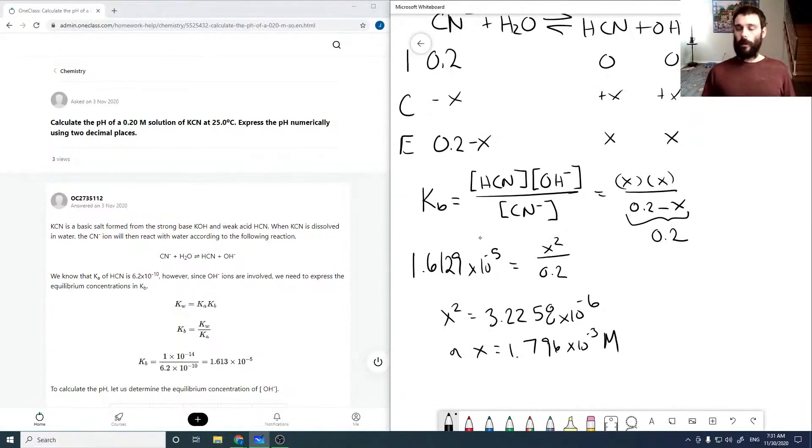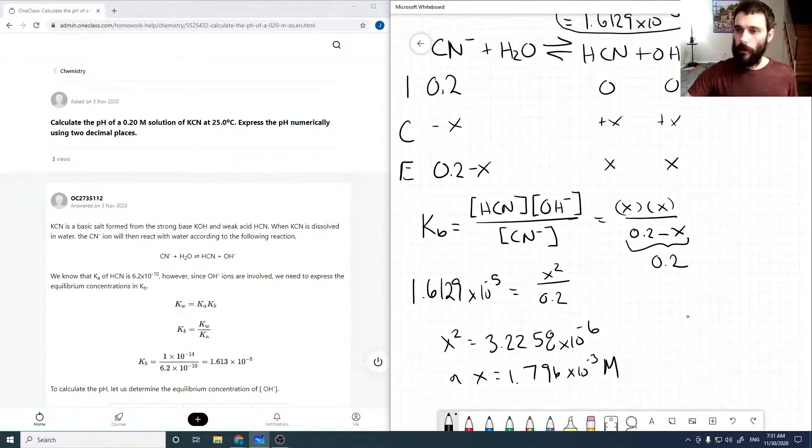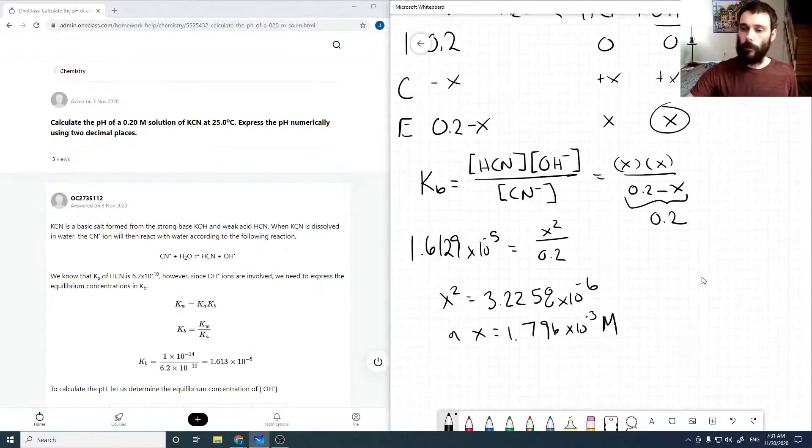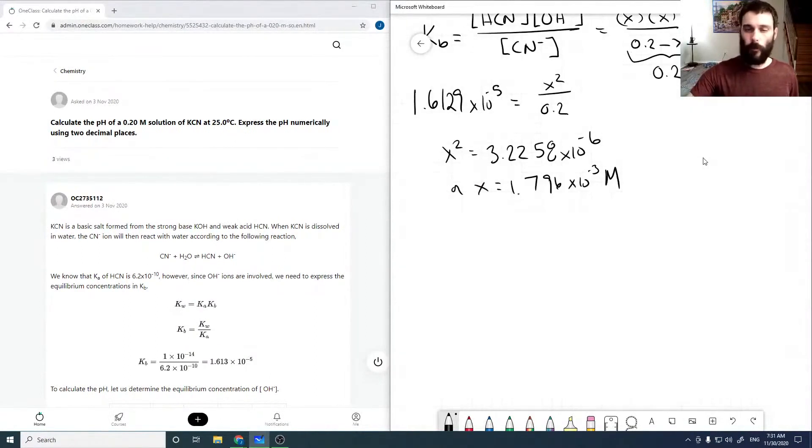Looking at our ICE table above, x is our OH minus concentration at equilibrium. For pH, we want our H3O plus concentration.